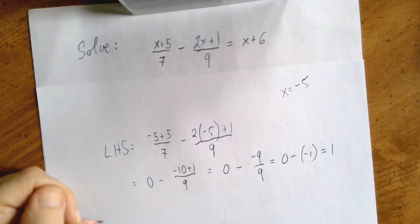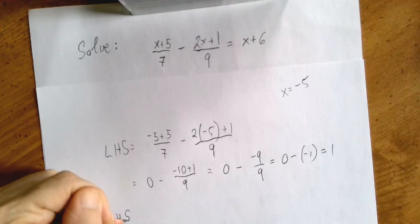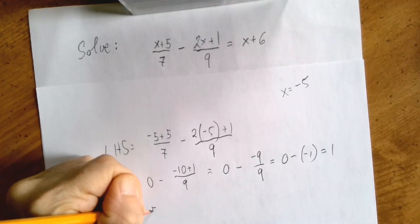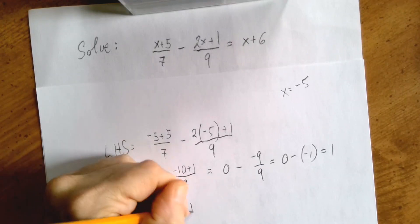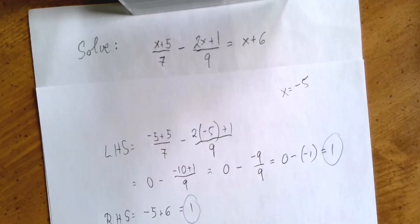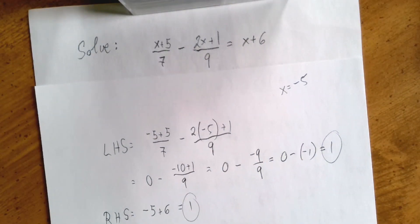What about the right-hand side? The right-hand side is minus 5 plus 6. That is also 1. So if we substitute x equals negative 5 into both sides, we will find that the two sides are equal. In other words, negative 5 is a solution of the equation.